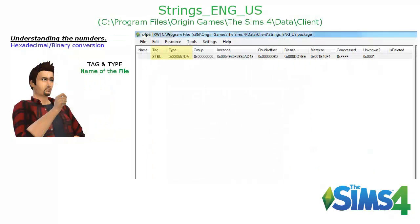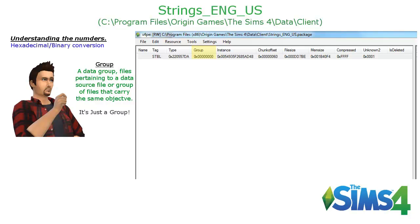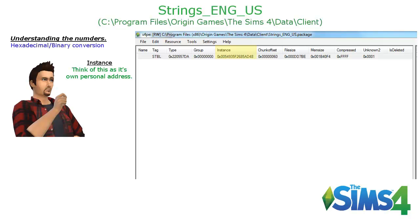The first two we see are tag and type. Tag and type are pretty much just the name of the file — one put into an abbreviation, that's the tag, and the other one, the type, is put into a hexadecimal code so the computer or the game itself can read it. The next line is our group — it's a group of data that all goes together. I usually don't change the numbers for groups because you might end up having collisions with other files.